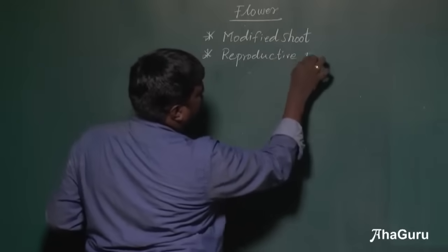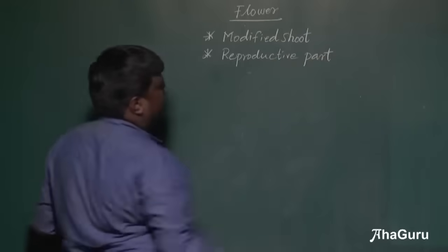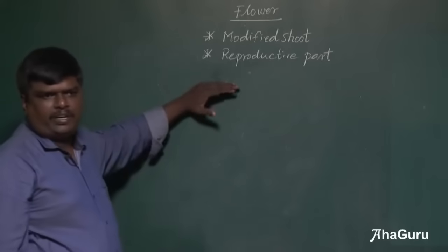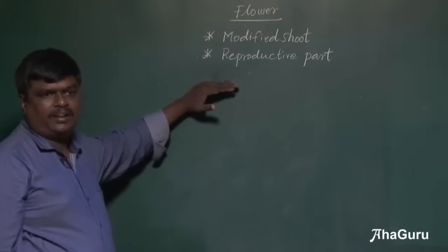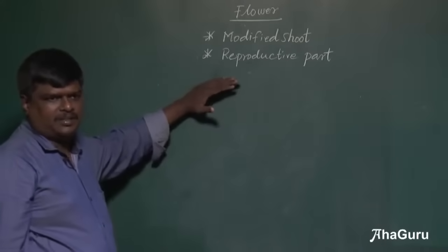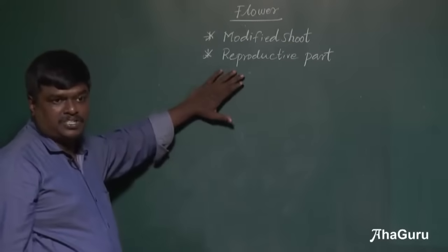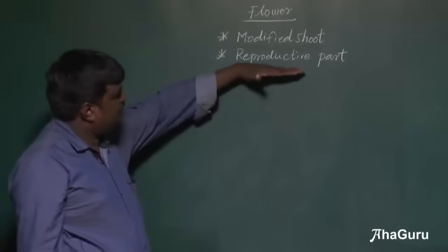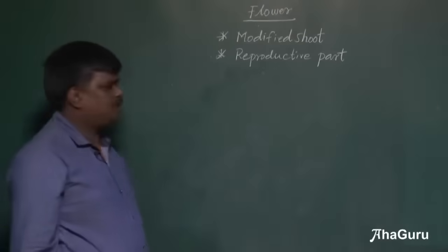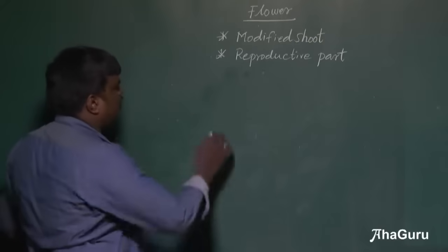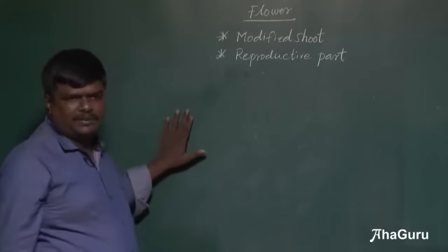This is the reproductive part of a plant — the only part that is involved in reproduction. In the case of sexual reproduction, the flower is the reproductive part. Now we are going to talk about what are the different parts of a flower.